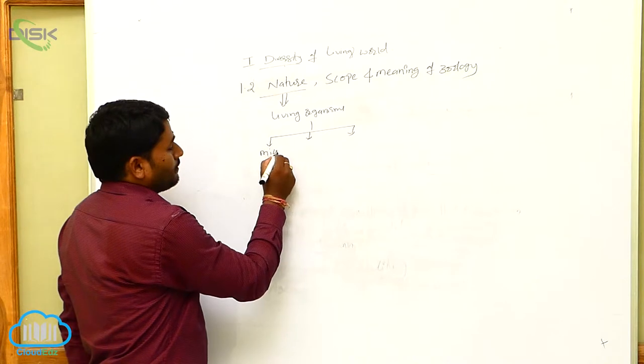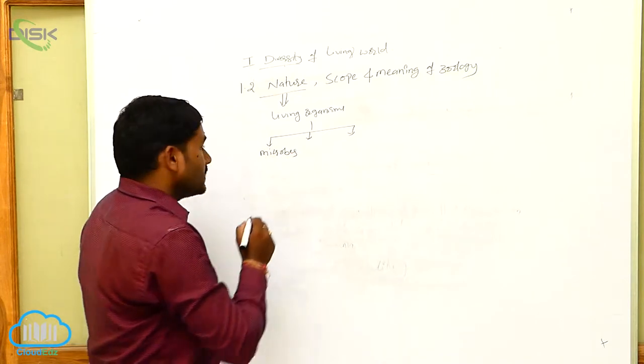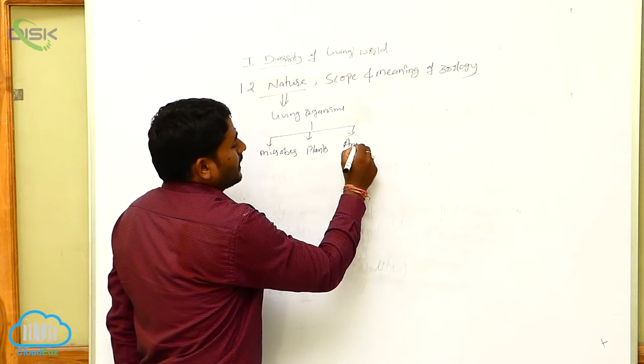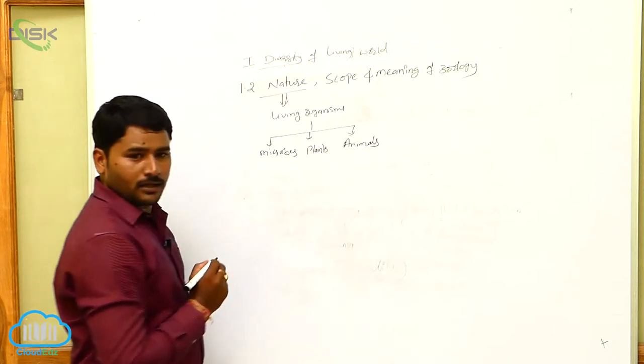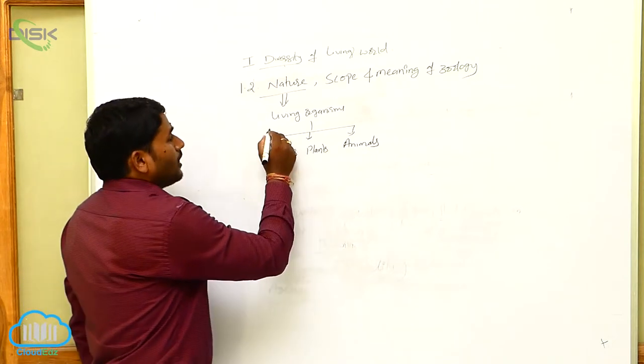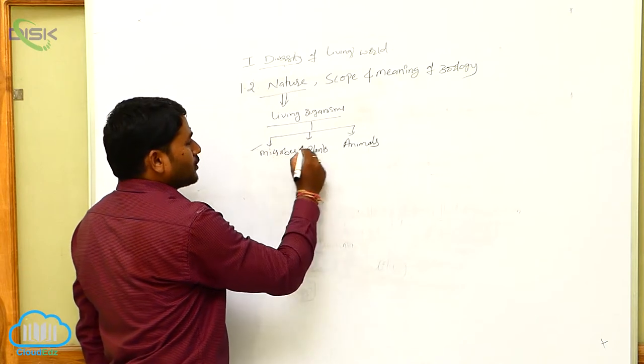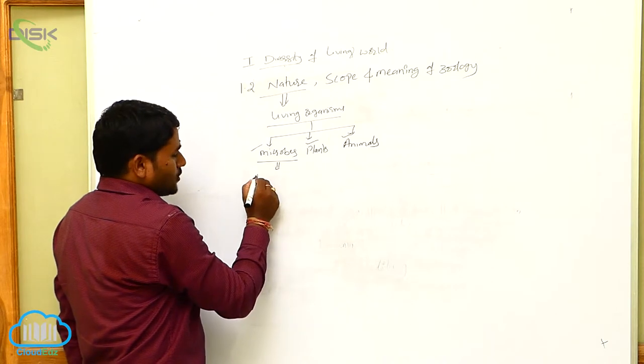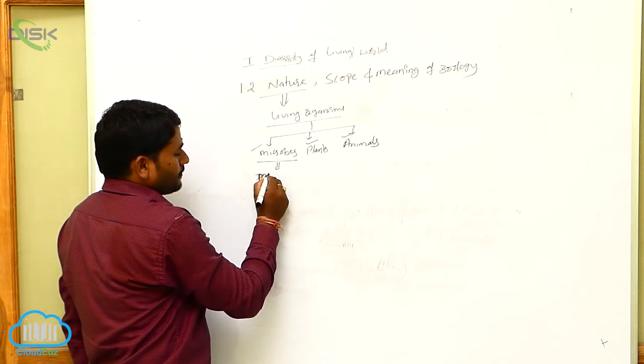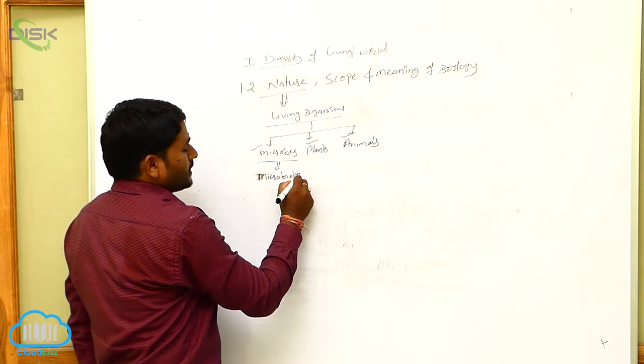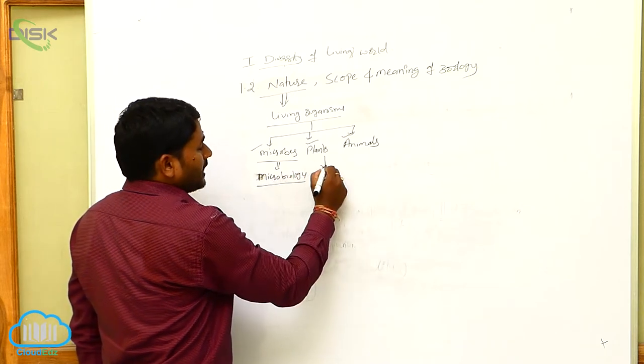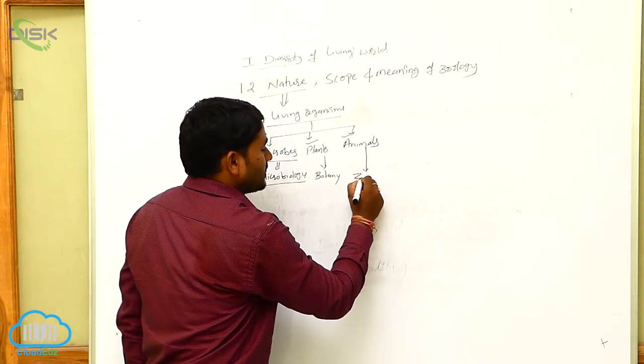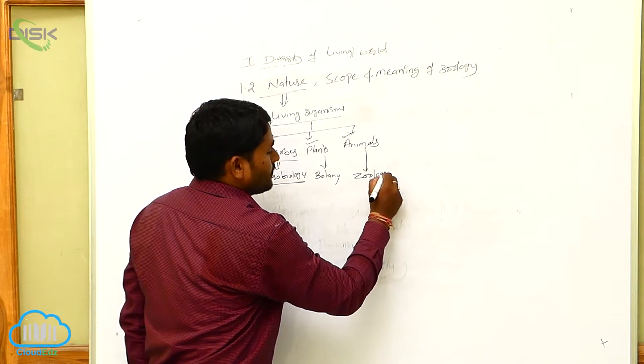So one is microbes, second one is plants, third one is animals. So the study of microbes is known as microbiology. The study of plants is known as botany. The study of animals is known as zoology.